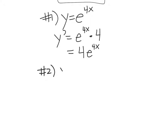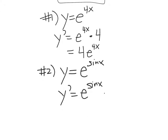Number two: y equals e to the sine x. Now we get to mix them all in, because you know how to take derivatives of all these functions. This is chain rule again. Take the derivative of e to the whatever, leaving it alone — the derivative of e to the x is e to the x — so you leave it exactly as is, and then times the derivative of sine x, which is cosine x.